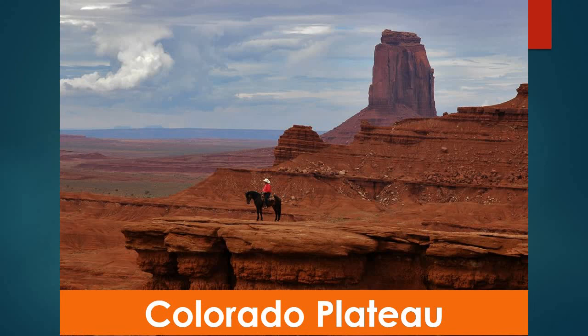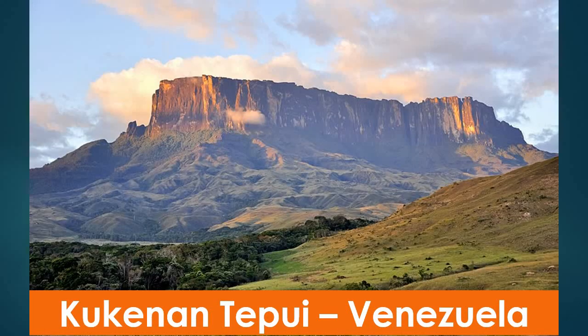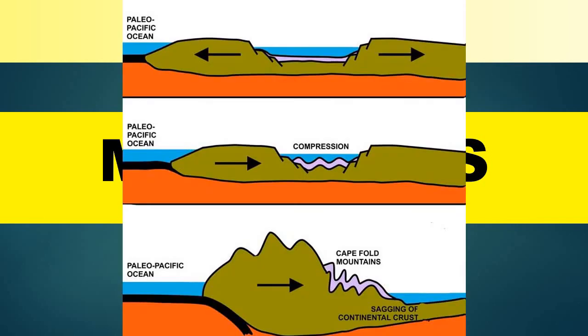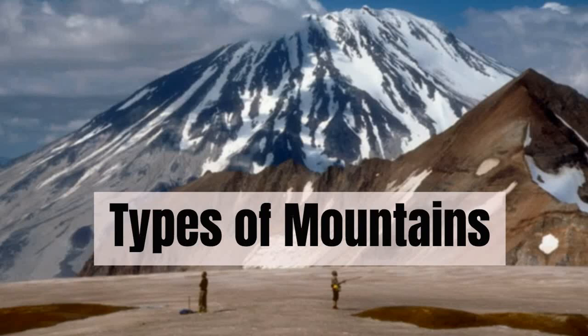An example of plateau or erosion mountains is the Colorado Plateau, where we can see that parts of the landform erode over time. Another example is the Cucenan Tepui in Venezuela. Today we discussed mountains and the processes of how mountains are formed — mountains form when two continental plates collide — and we also discussed the different types of mountains.